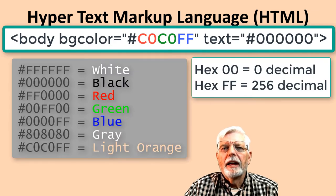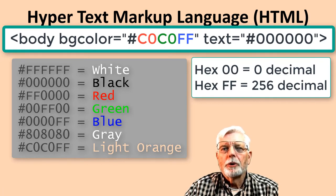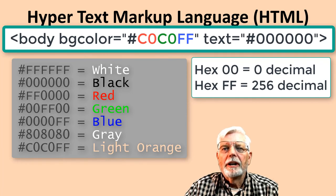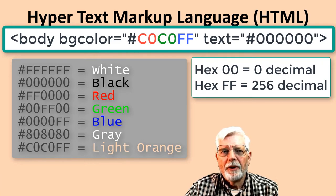For example, #FFFFFF represents white, #FF0000 gives red, #00FF00 gives green, and #0000FF gives blue. #808080 gives gray. There will be a separate presentation on hexadecimal values.